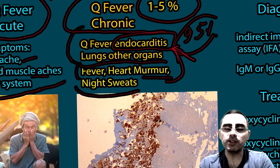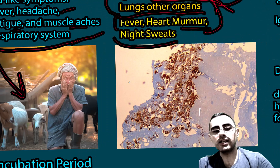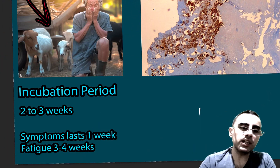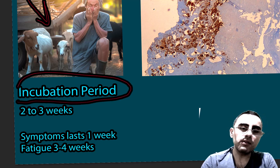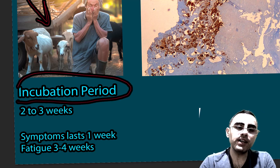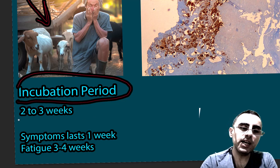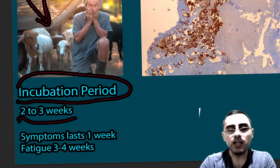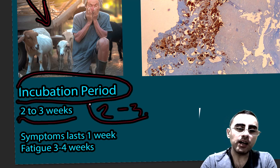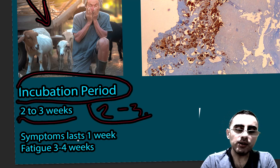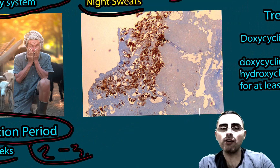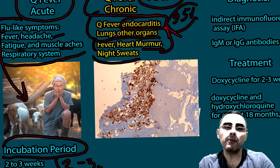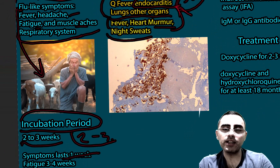Symptoms of chronic Q-fever include fever, heart murmur, and night sweats. The incubation period — the time between first contact with the bacteria and the first symptoms — is two to three weeks. Symptoms usually last one week, after which recovery occurs. Following recovery, fatigue can persist for several weeks. In cases of chronic infection, symptoms can last much longer.